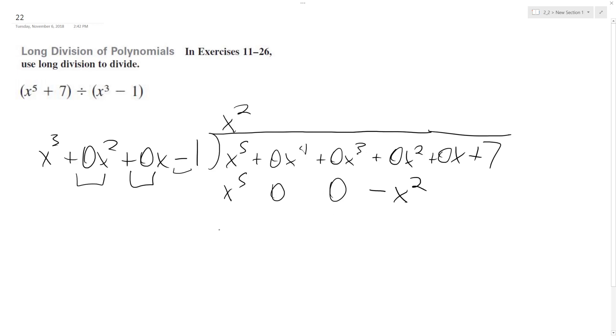Alright, so bringing this down, or switching signs, so minus 0, and then these are all 0, 0, 0. And then I got x squared down here, so how many times does x cubed go into x squared? It doesn't. So we get plus 7 down here. I mean, I could write plus 0x and then plus 7. So we have x squared plus, and then our remainder is x squared plus 7.